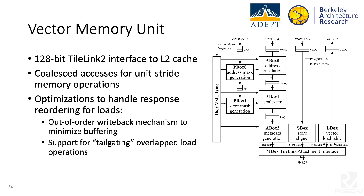The vector memory unit is connected to the L2 cache by a 128-bit TileLink 2 interface. To utilize bandwidth effectively, adjacent elements are coalesced during unit-strided memory operations. Load data can be written to the register file out of element order as soon as they arrive to minimize buffer requirements, and multiple vector loads can be overlapped to minimize latency between consecutive operations.